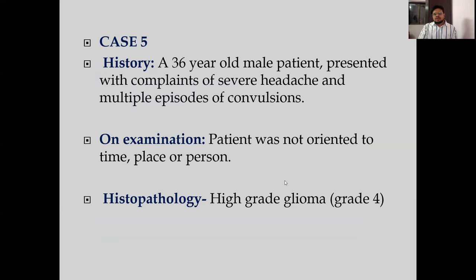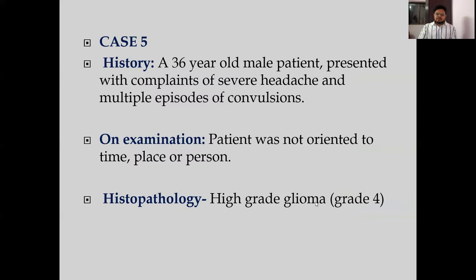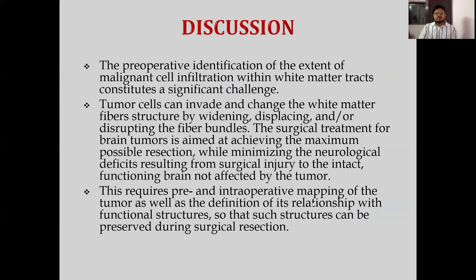Case 5: a 36-year-old male presented with complaint of severe headache and multiple episodes of convulsions. The patient was not oriented to time, place, or person. Imaging revealed an ill-defined solid cystic, T2/FLAIR hyperintense, ring-enhancing lesion in the left temporal lobe. There was reduction in fractional anisotropy, and we can see there is complete destruction of the white matter tracts. Histopathology revealed a high-grade glioma, grade 4.